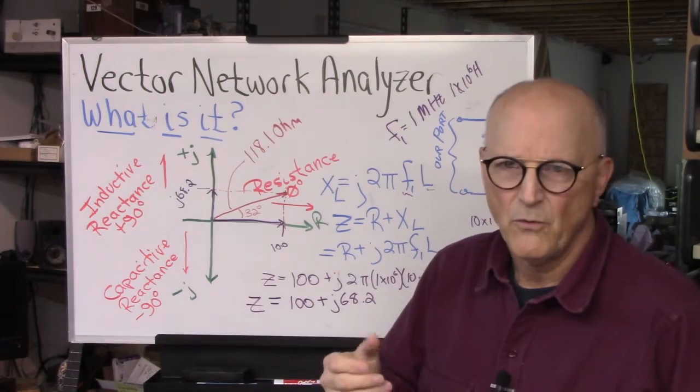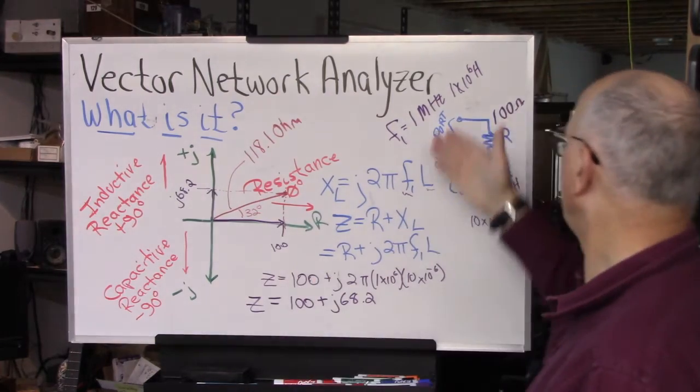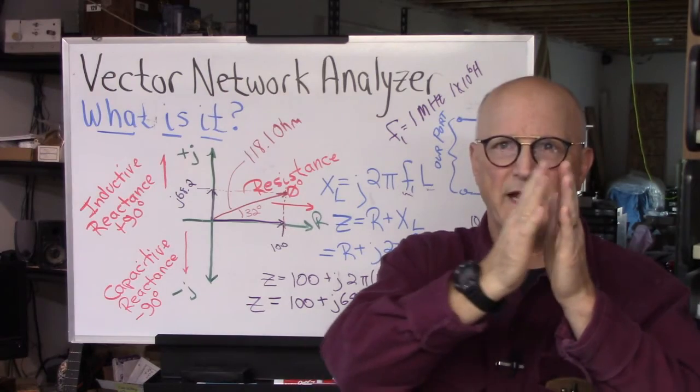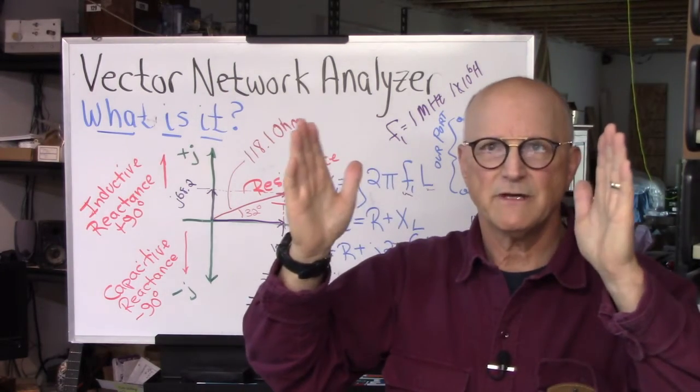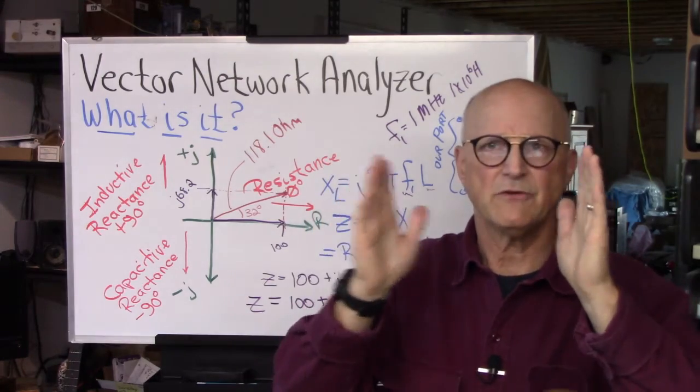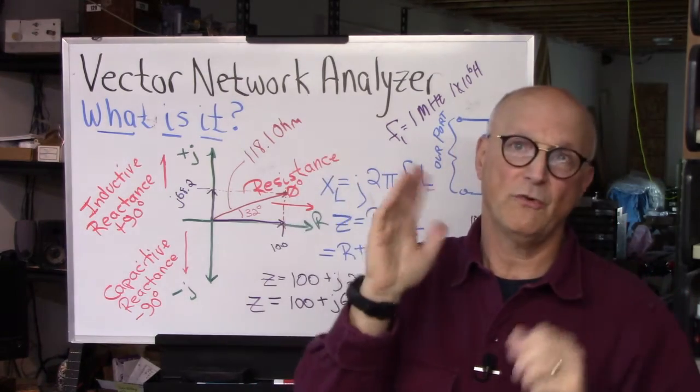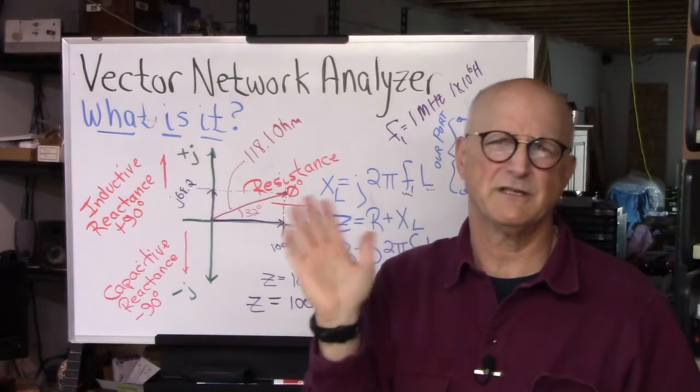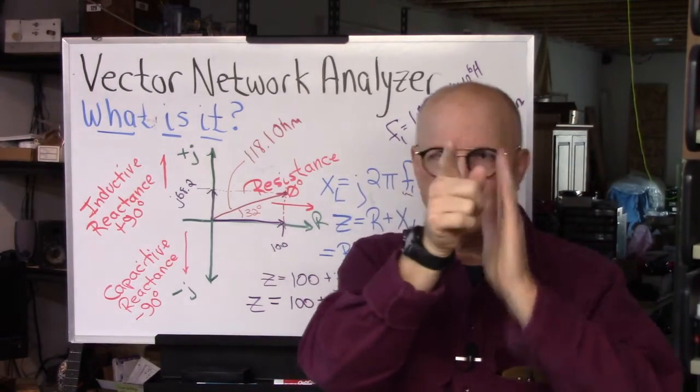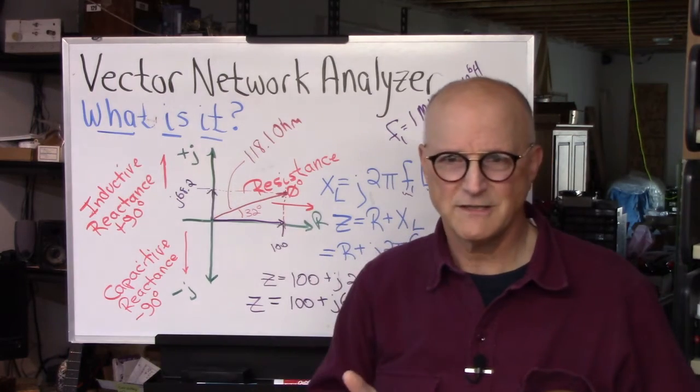But the VNA will, instead of just a single point like we did here at 1 MHz, the VNA will be able to scan across a series of frequencies and then report the results across the range. And then you go in and say, okay, well I'm only interested in what it's doing at 1 MHz. So you look at the range and you look at that particular one and you can see it.